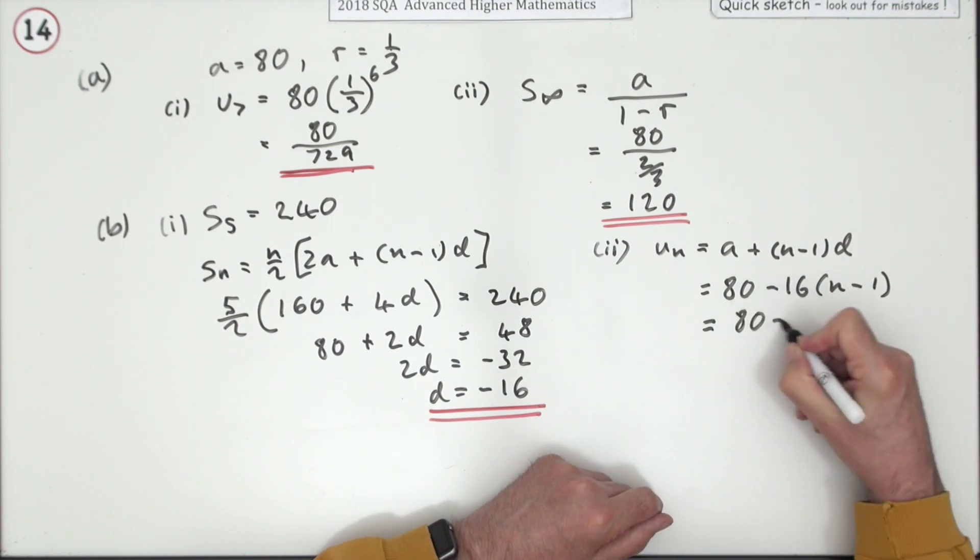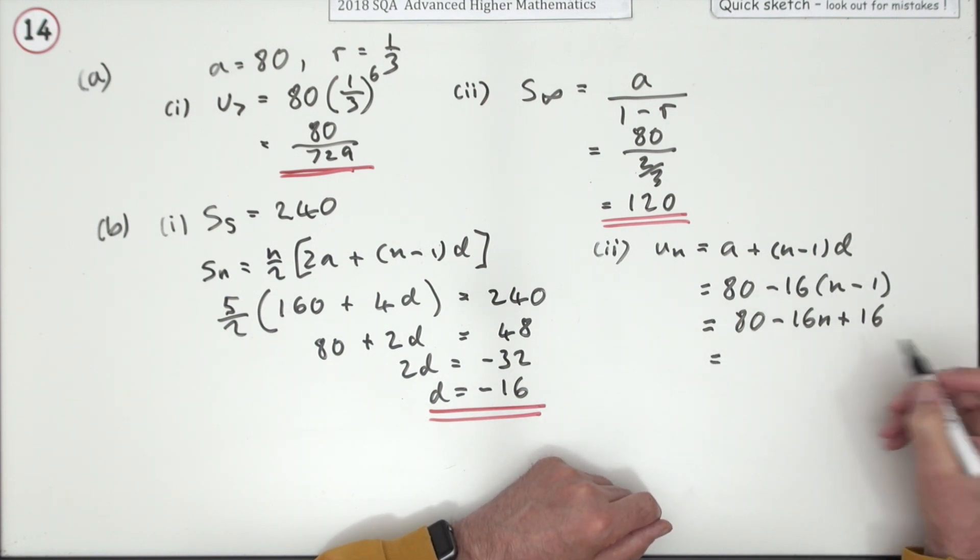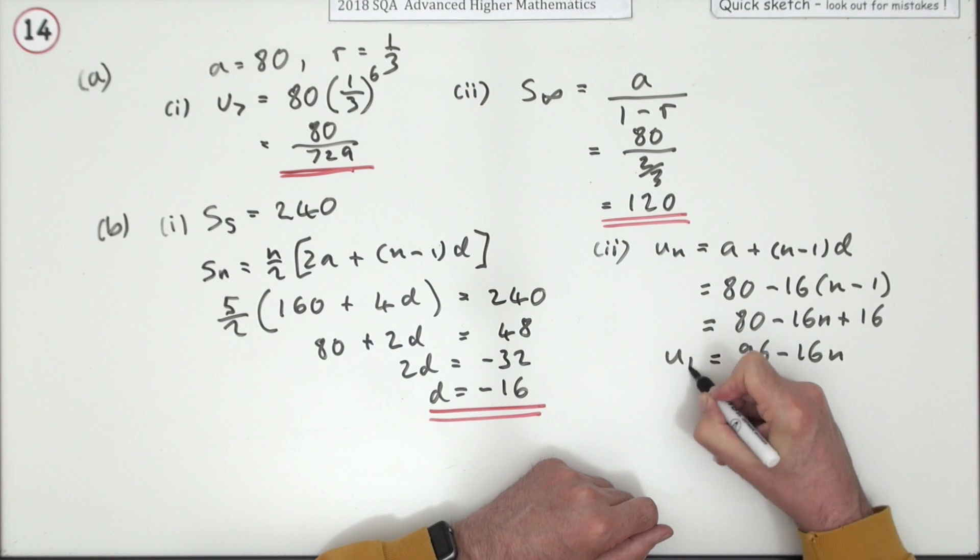Now, you've just got to simplify that. So, that's 80 minus 16, but plus 16n, but plus 16. So, that's going to be 96 minus 16n for the nth term.